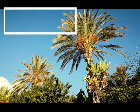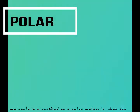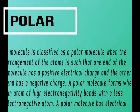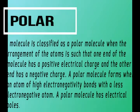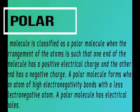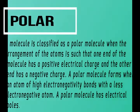What is a polar bond? A molecule is classified as a polar molecule when the arrangement of atoms is such that one end of the molecule has a positive electrical charge and the other end has a negative charge. A polar molecule forms when an atom with high electronegativity bonds with a less electronegative atom.